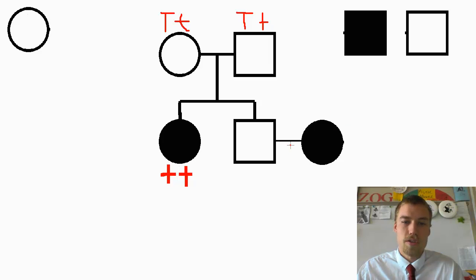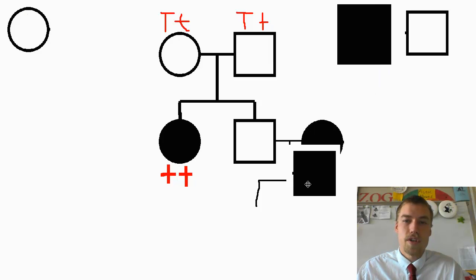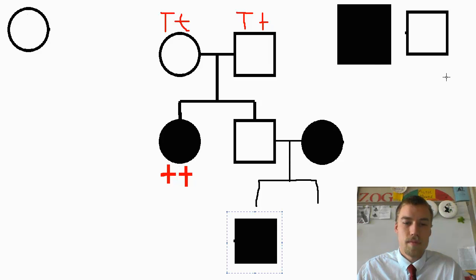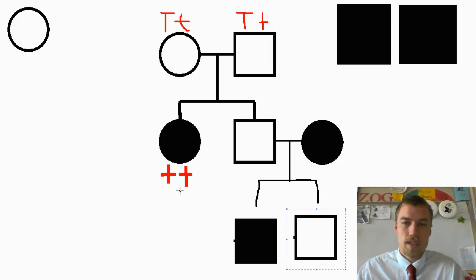All right, so we draw our line, show that they're having offspring. All right, and what we're going to discover here is that we've got offspring like this. We'll just extend those lines down.